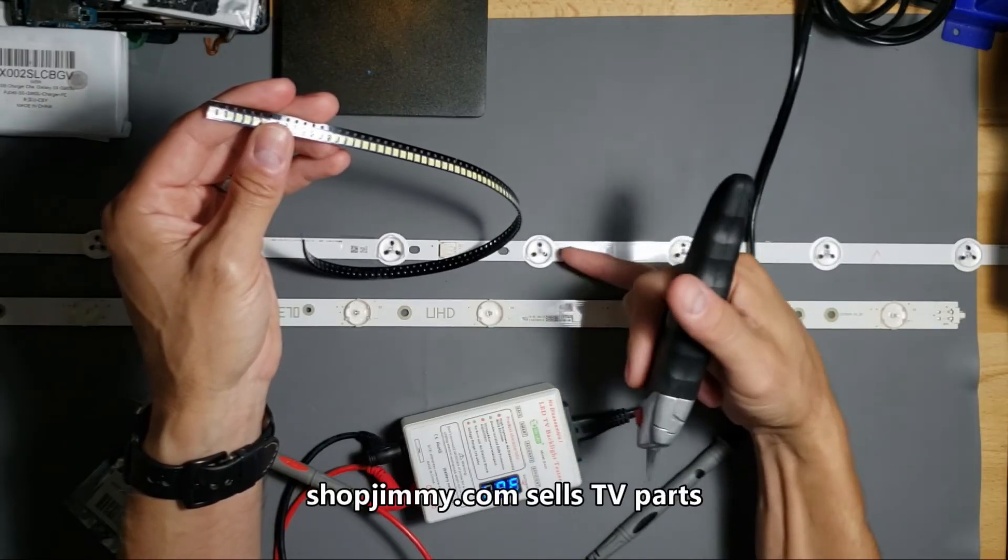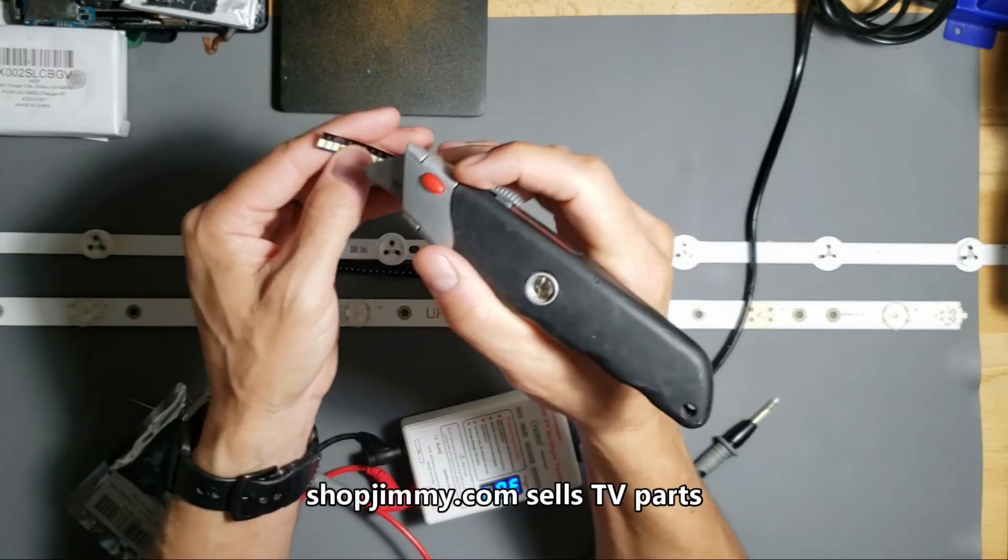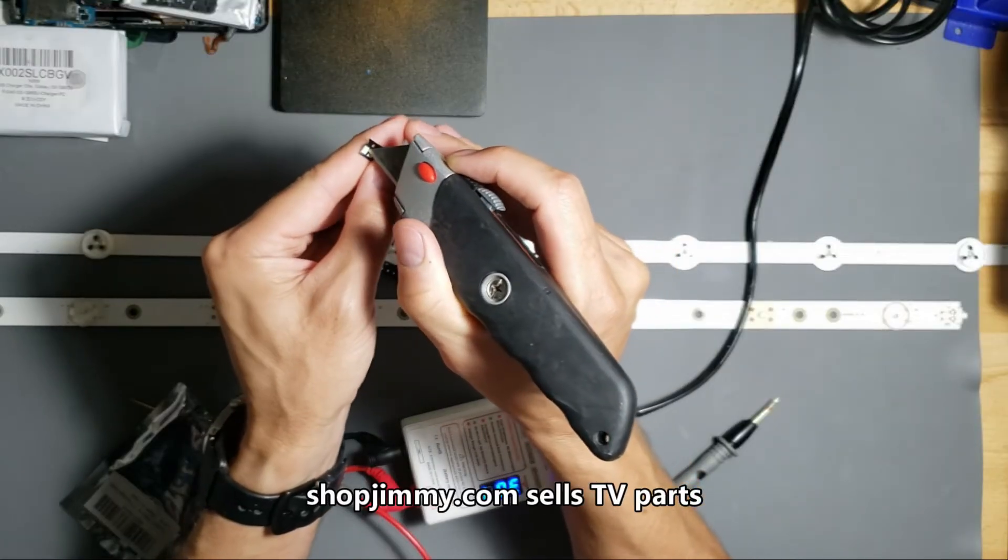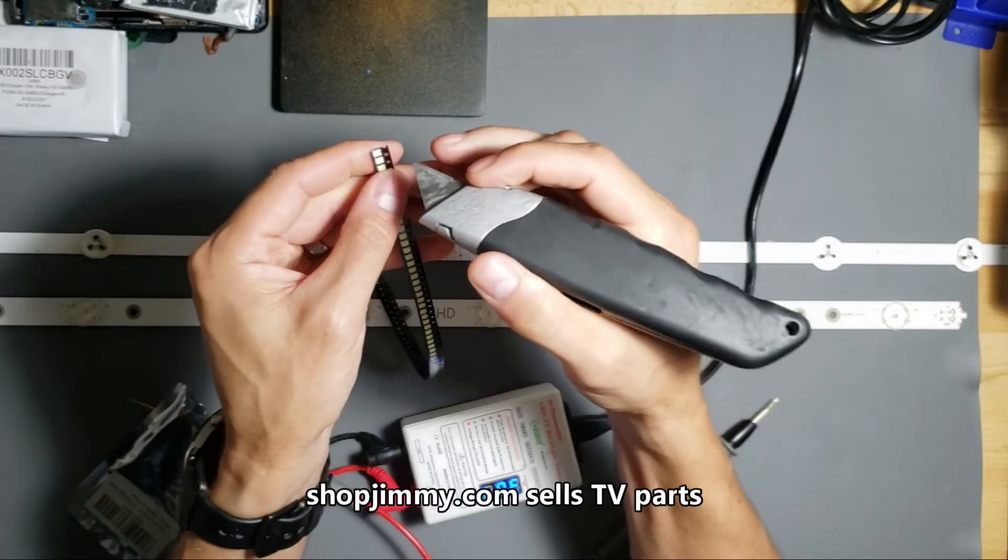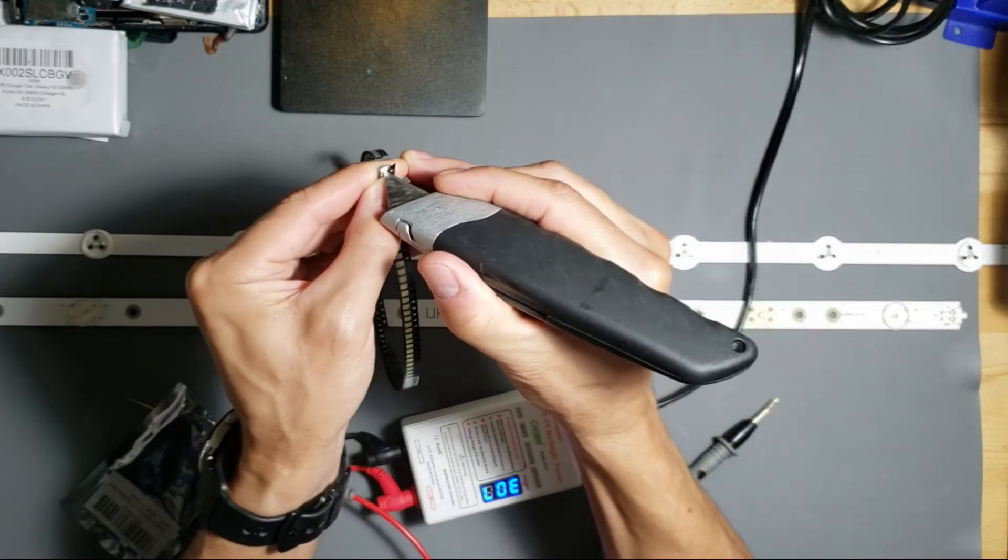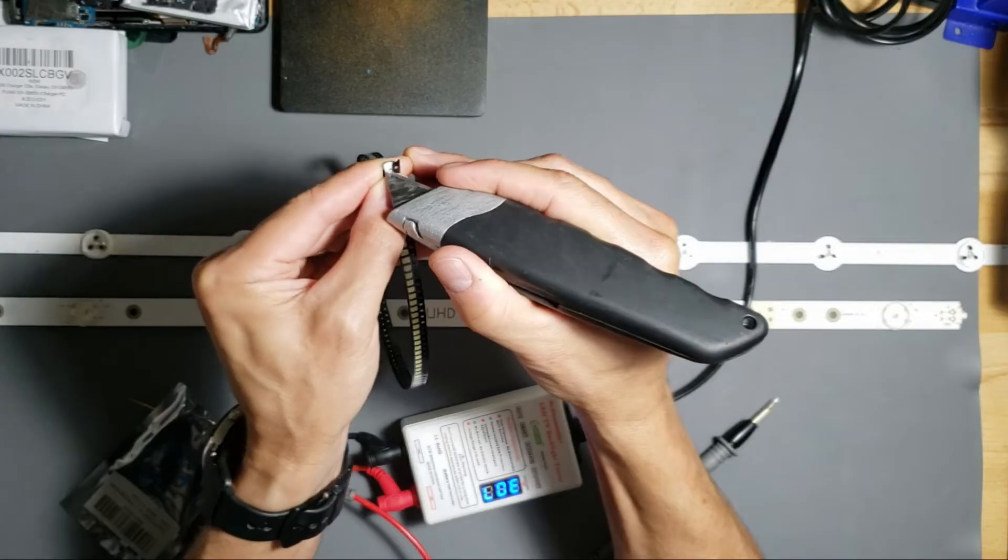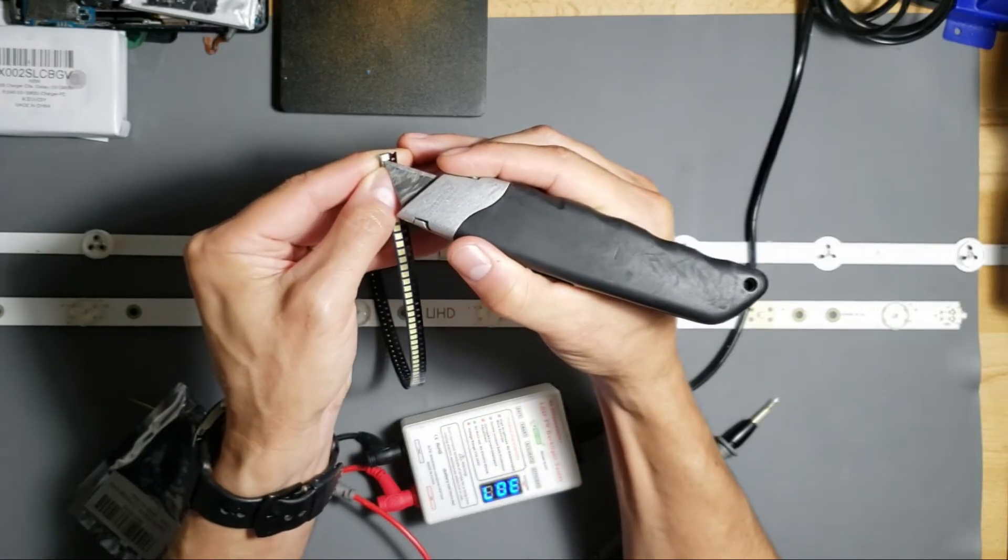ShopJimmy.com, they do sell these LED strips, I believe. And it's going to cost you over $100 for the kit. If you want to save yourself even more money, you could buy these LEDs separately. And it's going to take you a lot longer to fix the TV. But you're going to save yourself $100 or more.